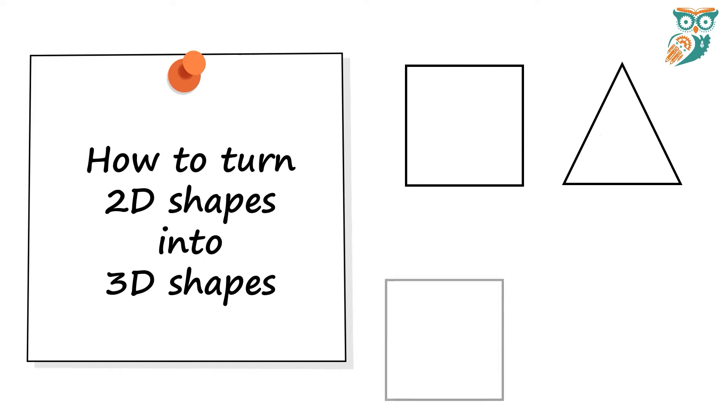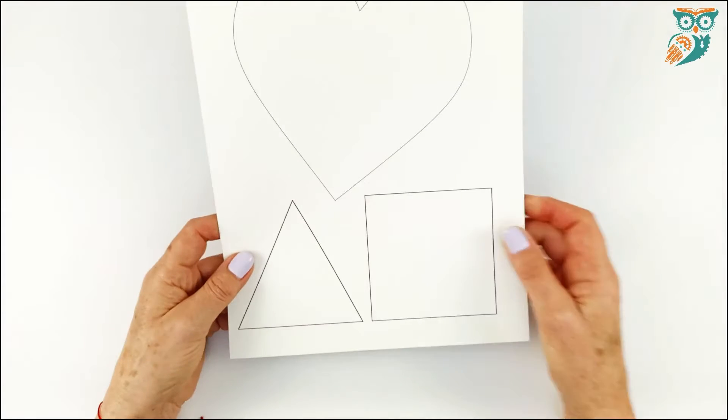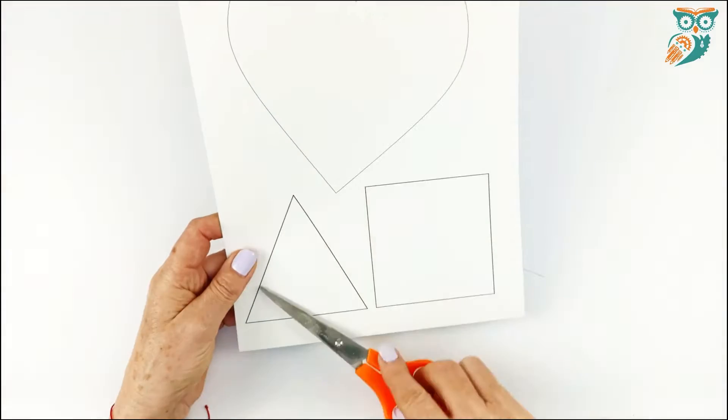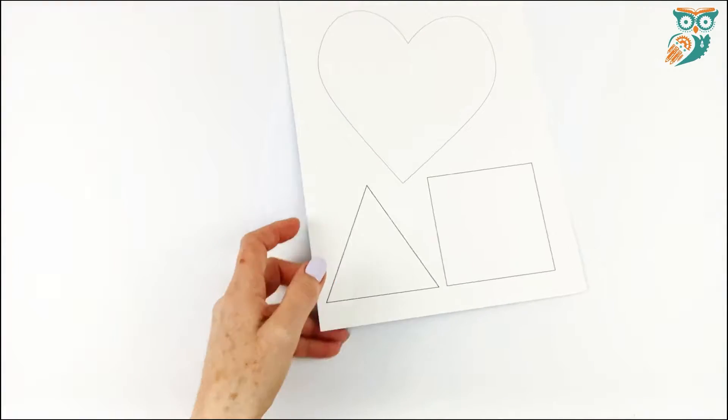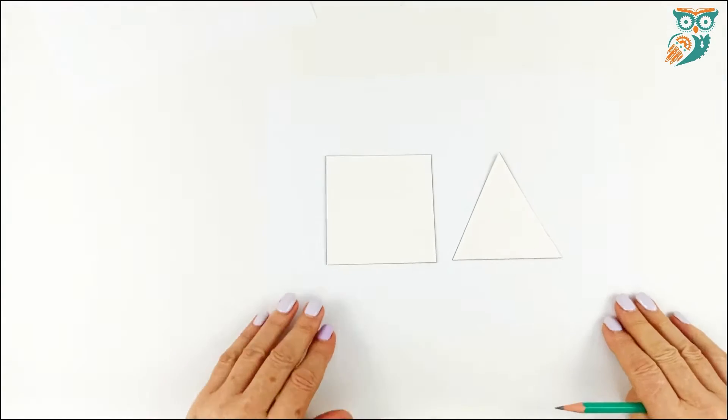So the first thing we're gonna do is we're gonna learn how to take a 2D shape and turn it into a 3D shape. If you've been on the STEAM Powered Family YouTube channel you've noticed probably our 3D nets project. So that's another great project that you can do with this.